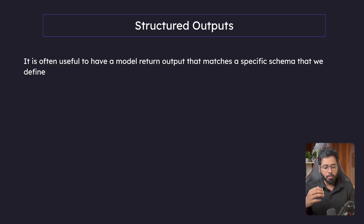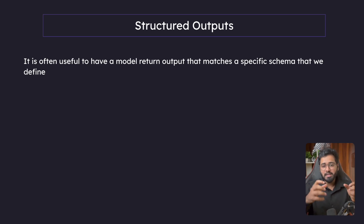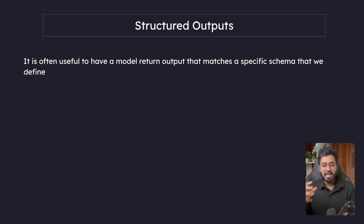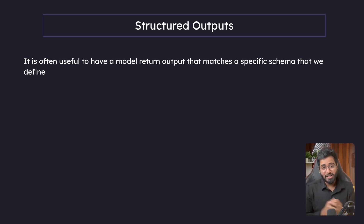It is often useful to have a model return output that matches a specific schema that we define. This is what software engineering is all about — we are always going to be dealing with structured data. There's going to be some object or JSON format with some properties that we extract and manipulate. The way we put it in the database is going to be in some structured format. So far, we've only been dealing with LLMs that just give out some random string that we can't really do anything solid with. But we can actually tell the LLM to give it in a structured format — give it as JSON with these exact properties.